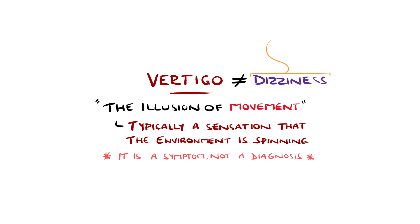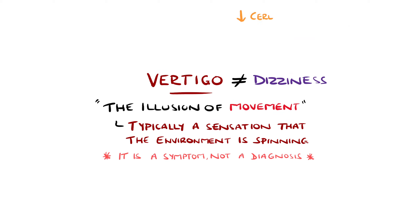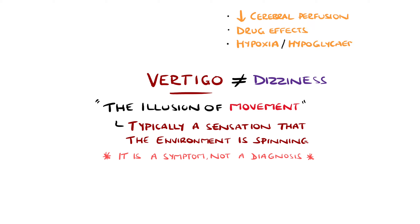Dizziness is a nonspecific term that describes sensations such as feeling faint or lightheaded, unsteady or even spaced out. Workup of vertigo should also include consideration of causes of dizziness, such as reduced perfusion to the brain due to hypotension, drug effects, hypoxia or hypoglycaemia, and psychiatric causes like panic.